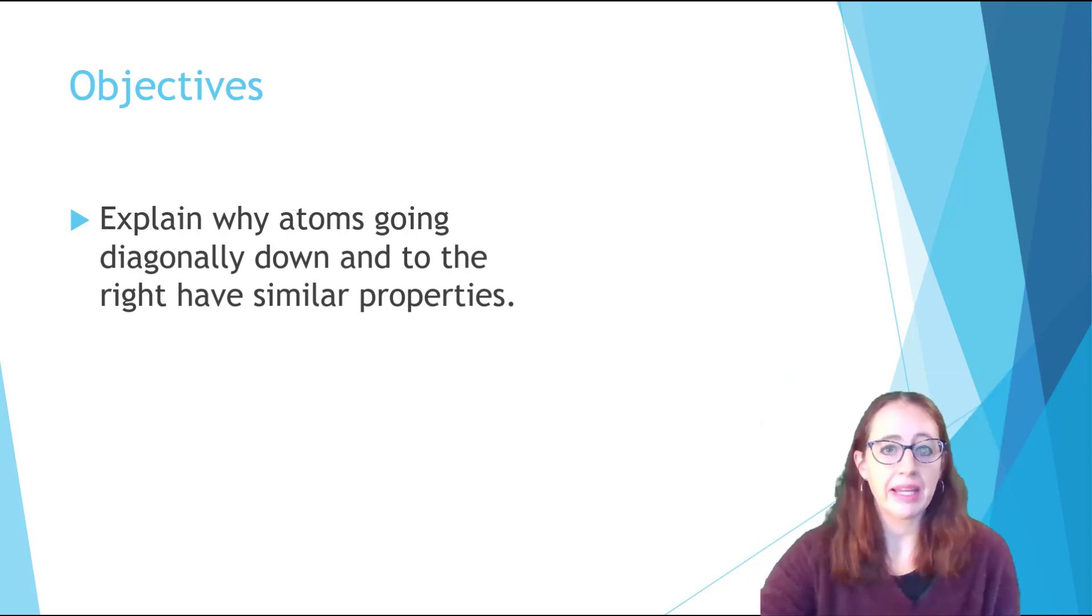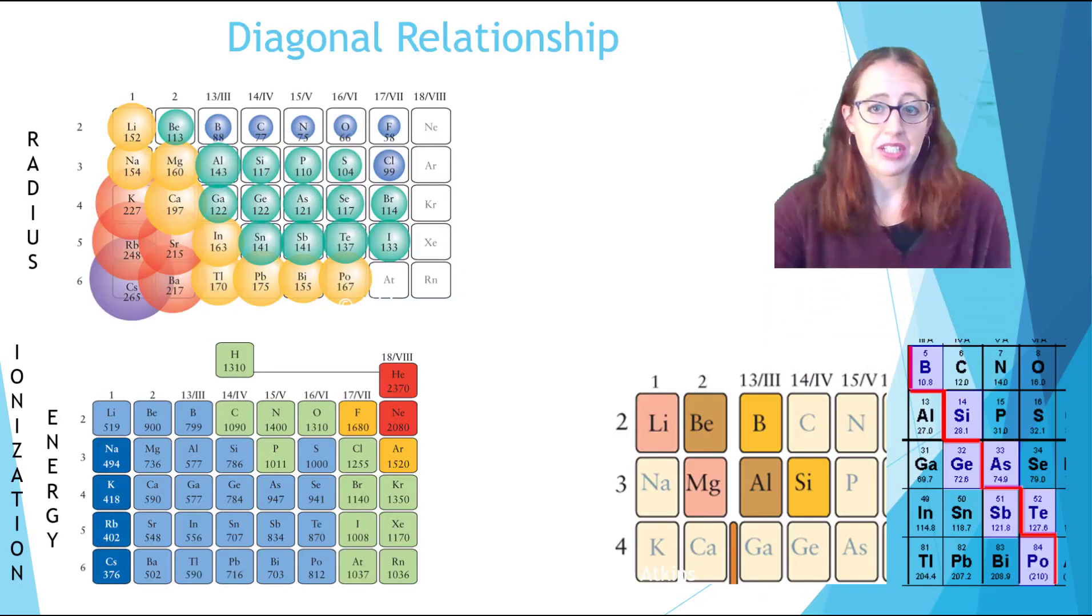Drawing your attention to and explaining why often species which are on a diagonal going down and to the right on the periodic table have similar properties. The diagonal relationship describes the observation that elements on this diagonal going down and to the right have some similar properties.